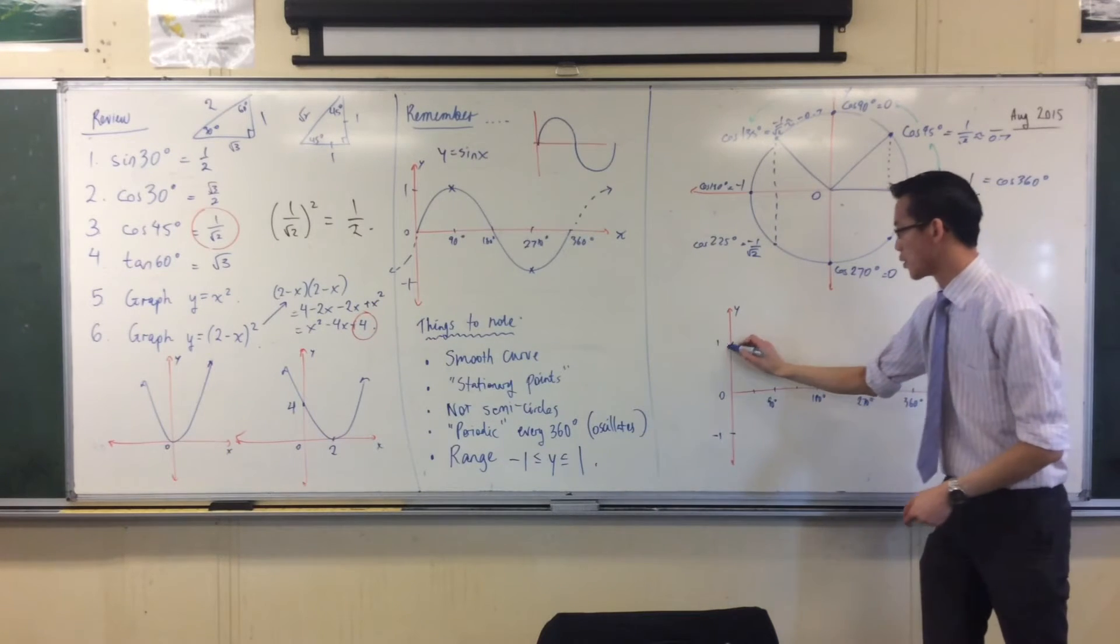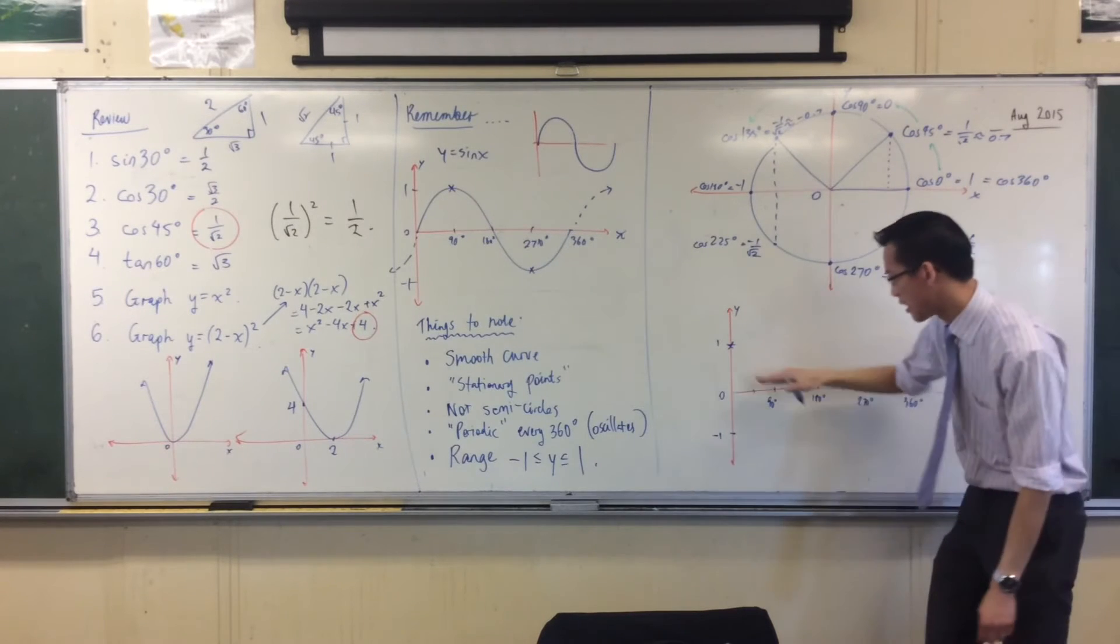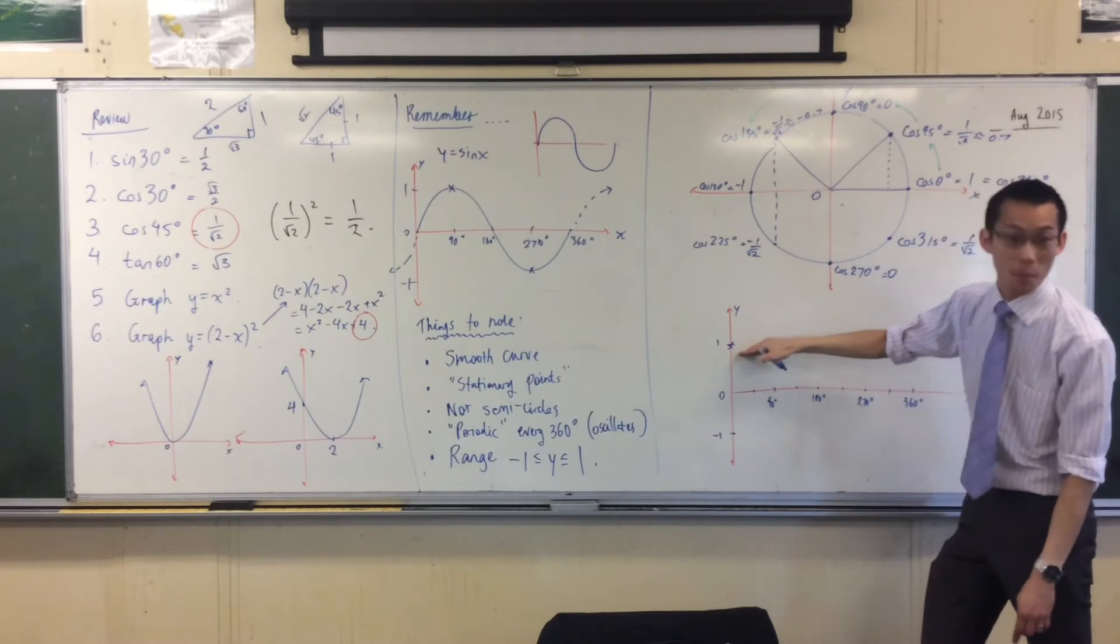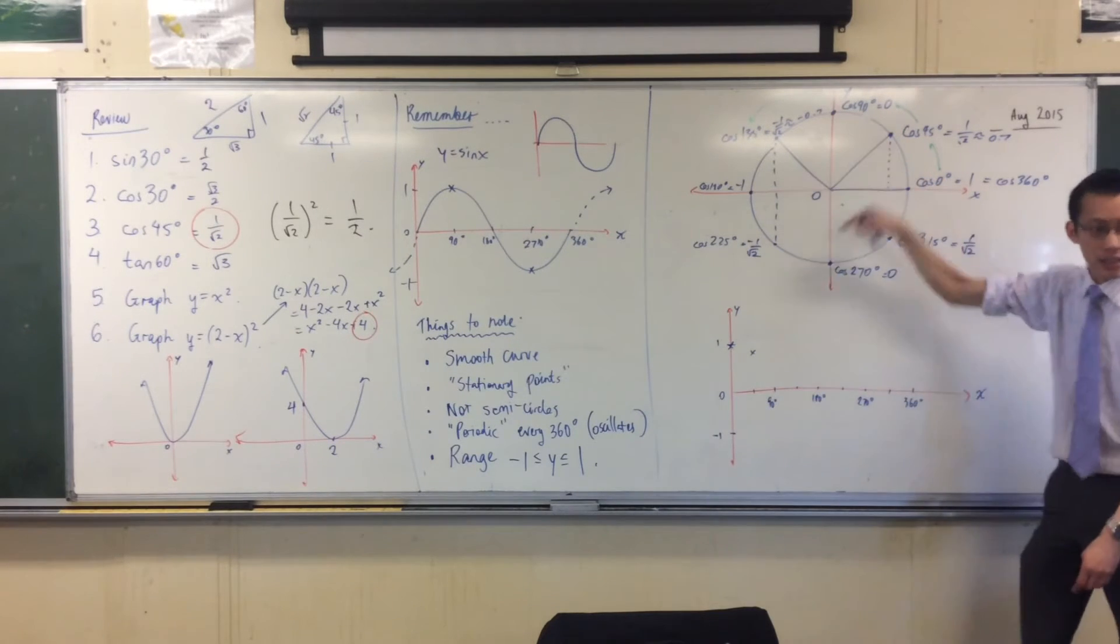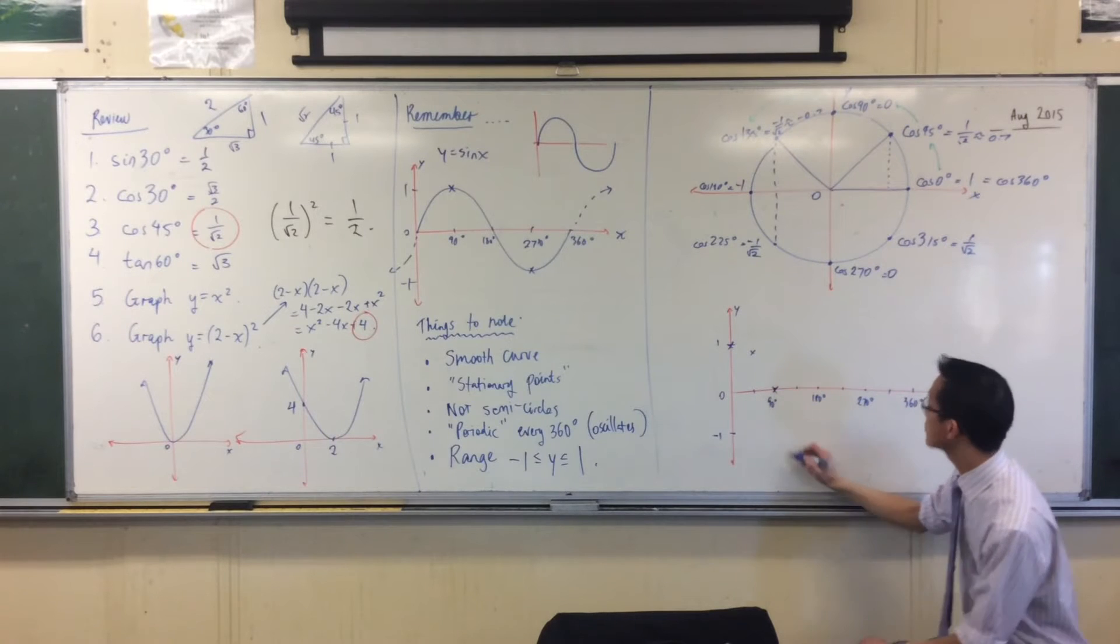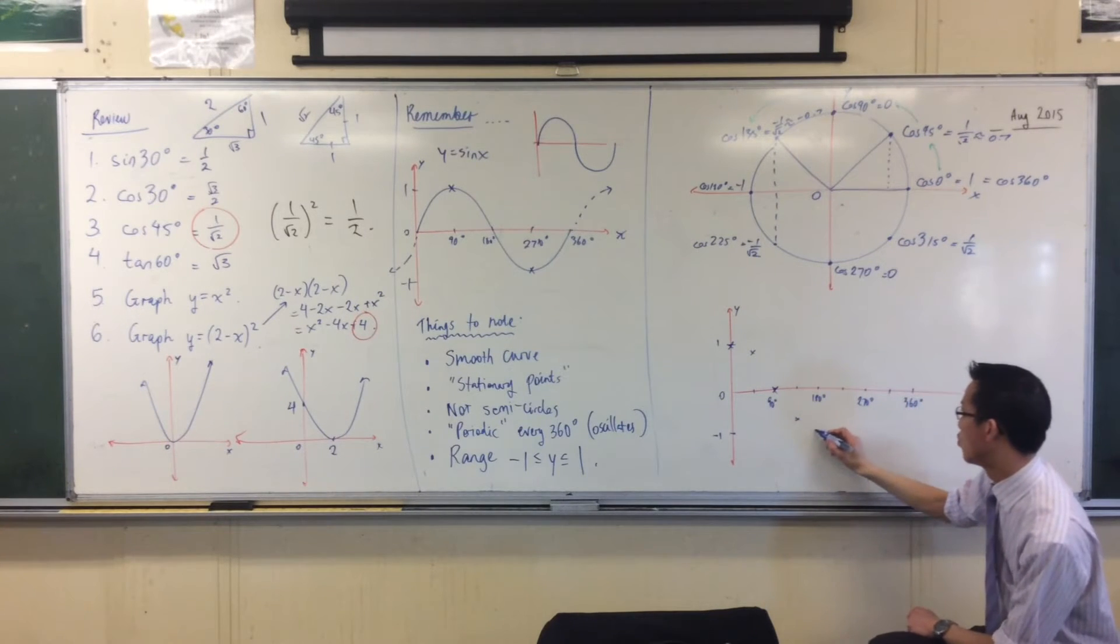cos of 0 is 1, cos of 45 is about 0.7, so you look at like where halfway is, and then you go a bit further up, something like that. Cos of 90 is 0, 135, 80.